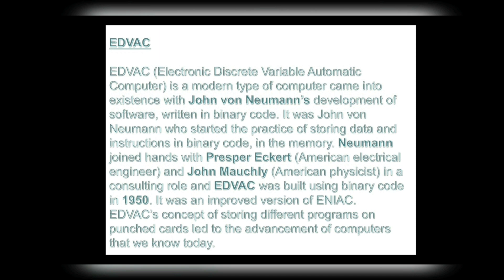EDVAC is a more modern type of computer, arising from John von Neumann's development of software written in binary code. Von Neumann started the practice of storing data and instructions in binary code in memory. He joined hands with J. Presper Eckert and John Mauchly, and EDVAC was built using binary code in 1950 as an improved version of ENIAC.